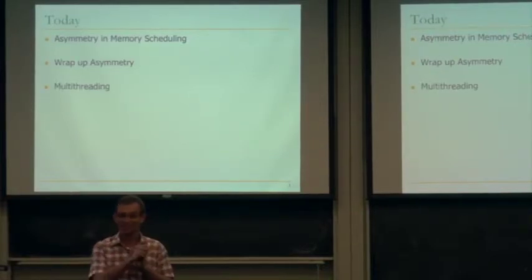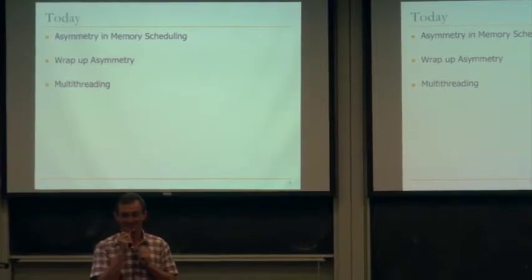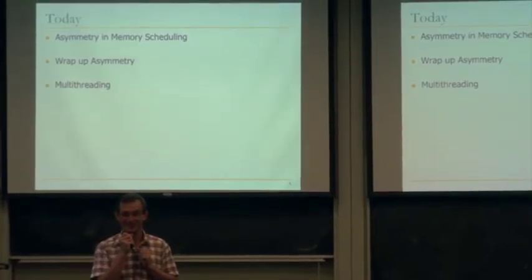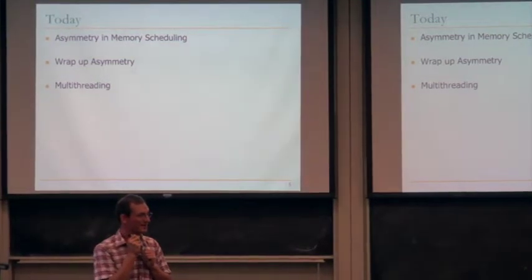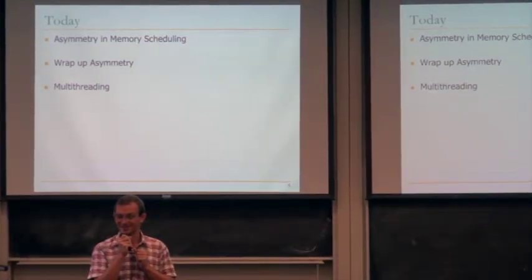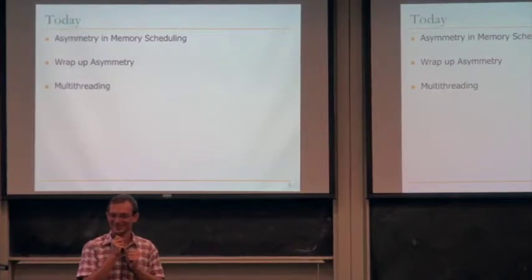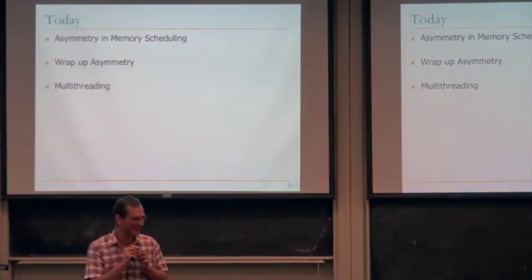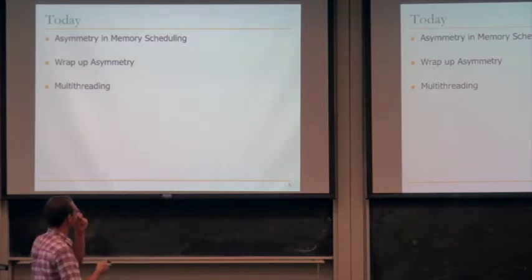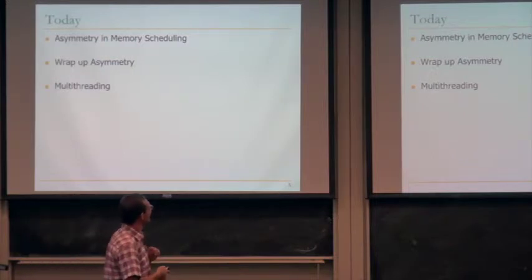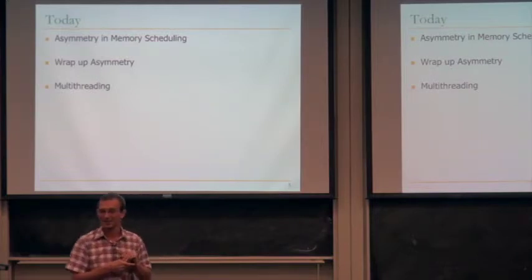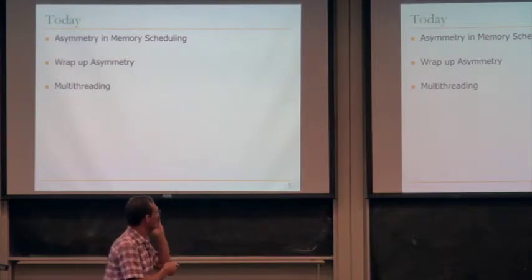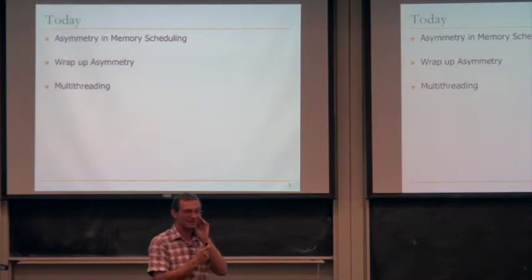We'll talk about some architectures designed to execute fine-grained tasks today — some of the early multi-threading architectures. One of the papers you read about the heterogeneous element processor was designed to execute very fine-grained tasks. Remember the synchronization primitives, like the full-empty bits? The Burton Smith paper from 1981 talked about that. At least one person read that part of the paper. So today we'll look into other examples of asymmetry in memory scheduling, wrap up asymmetry, and then jump into multi-threading.